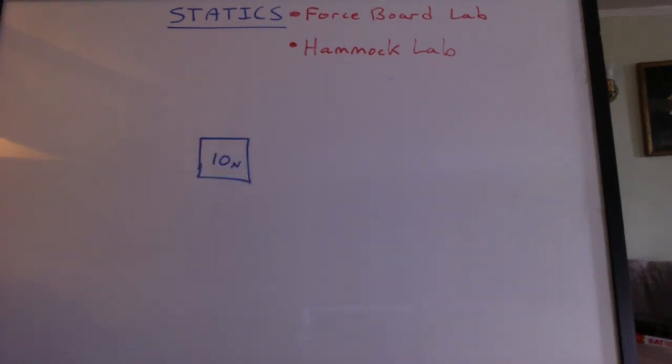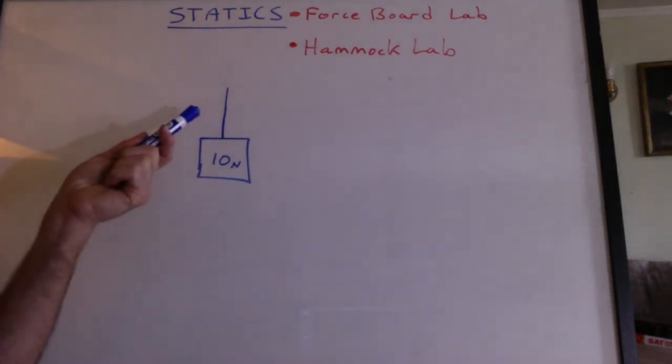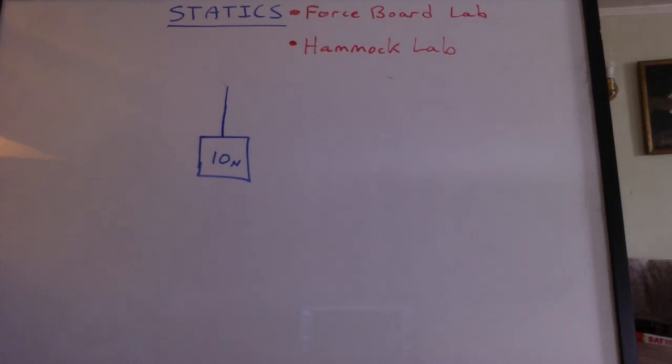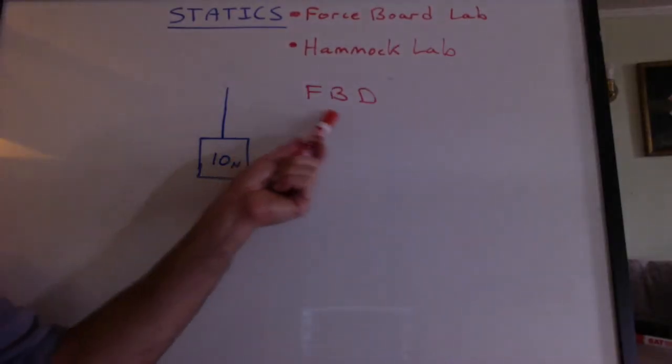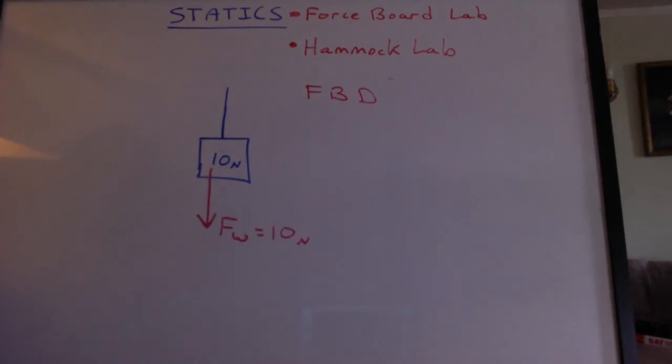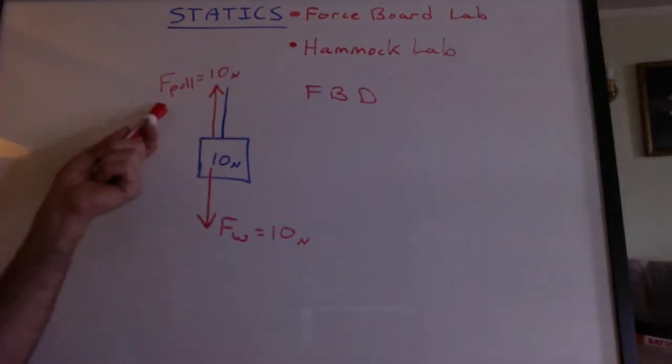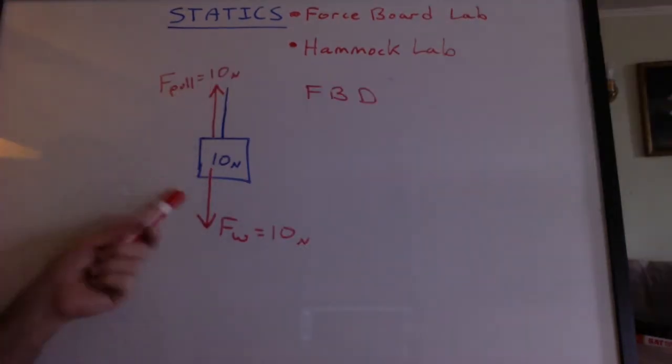Let's try a real simple example. Let's say I have a weight of 10 newtons, and I'm going to hold it up with this string. What would the forces look like acting on this weight? That's another way of saying, draw a free body diagram. The force of the weight of this object is 10 newtons going down. If the object is not going to fall, then I must be pulling with a force of 10 newtons as well. The sum of these forces will be 0.